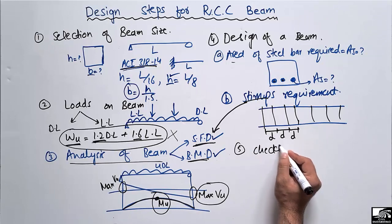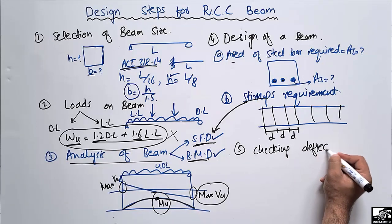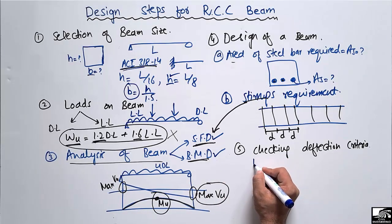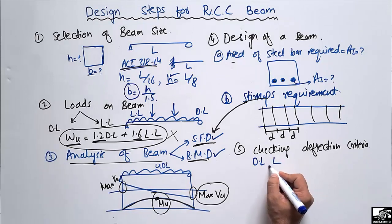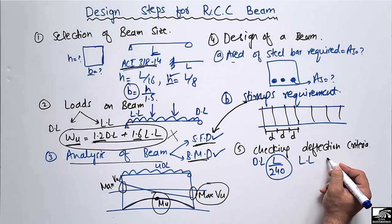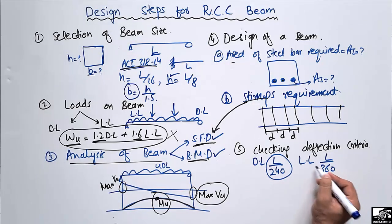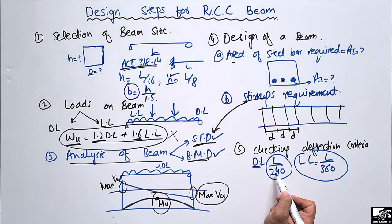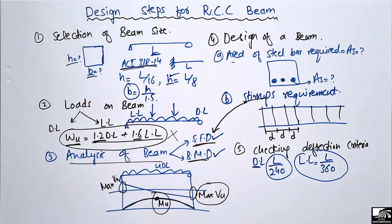The fifth step is checking the deflection criteria, which is important because if this criterion is not met, the design cannot proceed. For dead load, the deflection must be less than L/240. For live load, the deflection must be less than L/360. If the deflection does not satisfy these limits, we must increase the beam dimensions to increase its strength and resistance to load.